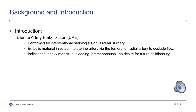Uterine artery embolization is a procedure performed by interventional radiologists or vascular surgeons. In the case of fibroids, the goal is to partially occlude flow in the uterine artery so that the fibroid loses its blood supply, but the blood supply to the remainder of the uterus is in place. The embolic material is injected and carried by arterial blood flow to the vessels feeding the fibroid, which are preferentially occluded since they are larger and have higher flow than myometrial branches. The procedure is terminated when the fibroid blood supply is occluded but there is still flow in the uterine artery.